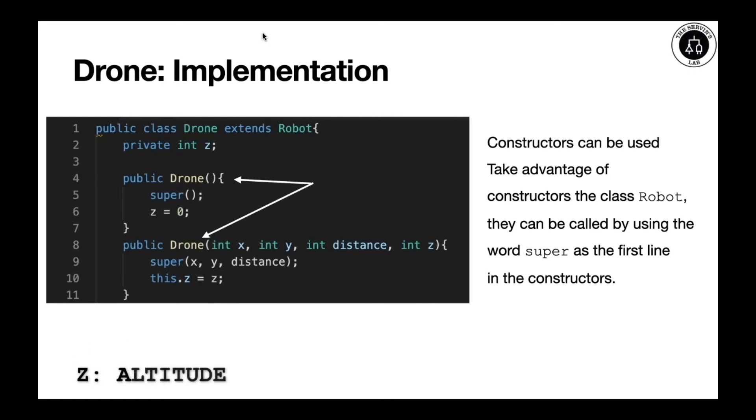Notice that we have the keyword super. The keyword super must be the very first line after we define the constructor. Super invokes the superclass methods or constructors, and it basically tells the superclass that we're going to use those constructors in this class. Notice that on line 5, we're using the super constructor or the default constructor on robot. And on line 9, we're using the super constructor for the customized constructor, the one that takes three parameters.